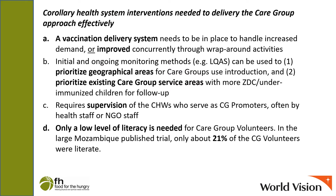Since this model increases vaccine demand, a vaccination delivery system needs to be put in place to handle that increased demand. Or alternately, that system needs to be improved concurrently through wraparound activities at the health facility level, such as cold chain improvement. It is good to pair care groups with a corollary monitoring system using LQAS or other monitoring and screening tools to first prioritize geographical areas where care groups should be set up — areas where there's poor equity, lower vaccination coverage, or more zero-dose children — and secondly to identify those areas where immunization rates and equity are not improving fast enough. LQAS was used in the large Mozambique trial very effectively to identify care group service areas that were not improving quickly in service coverage, so that additional activities can be added in those areas.